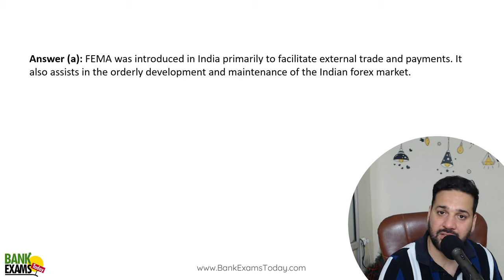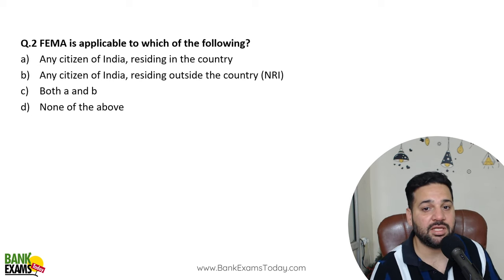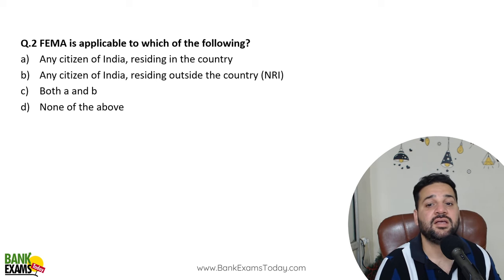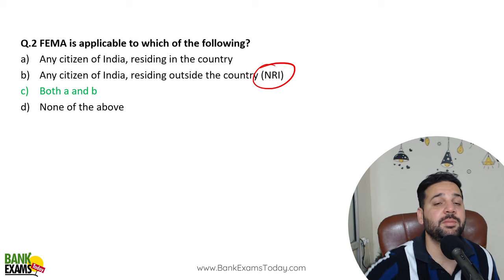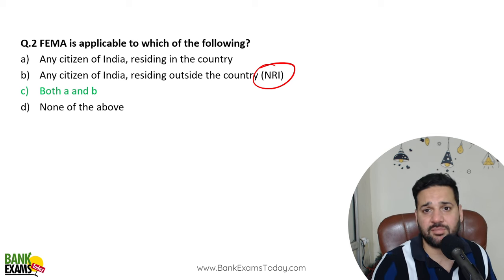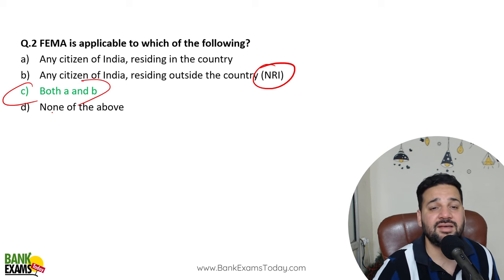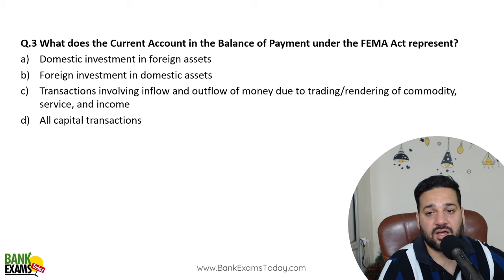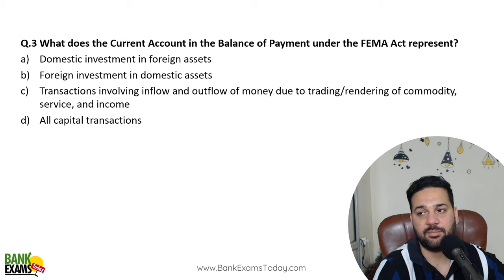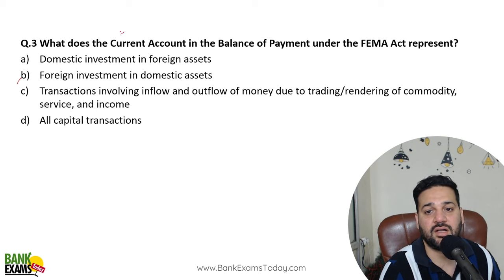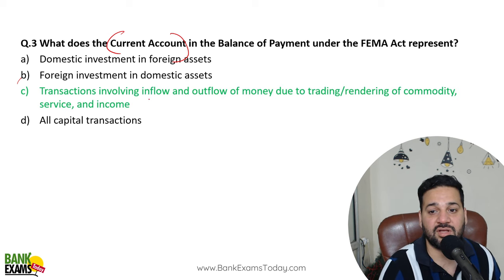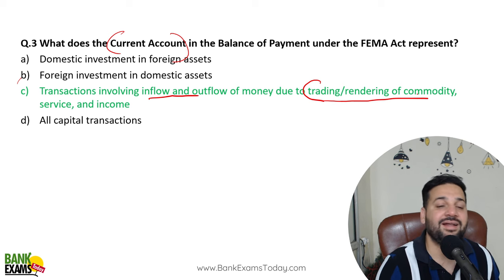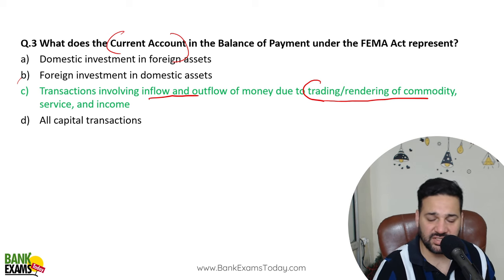FEMA is applicable to any citizen of India residing in India or any citizen of India residing outside India — any NRI as well. If an NRI has to make payment in India, invest in land, or do remittances, FEMA applies. Under FEMA, the current account in BOP represents transactions that involve outflow and inflow of money due to trading of commodities and rendering of services.